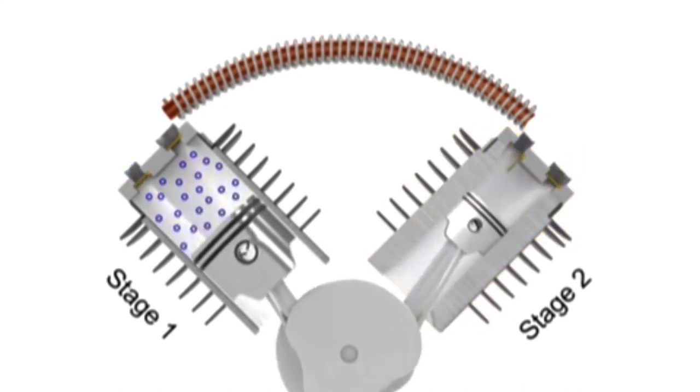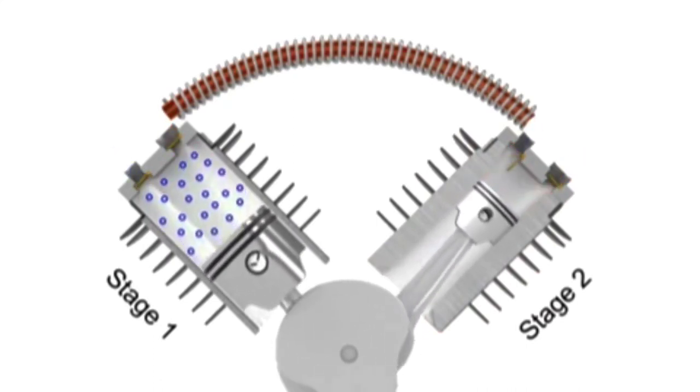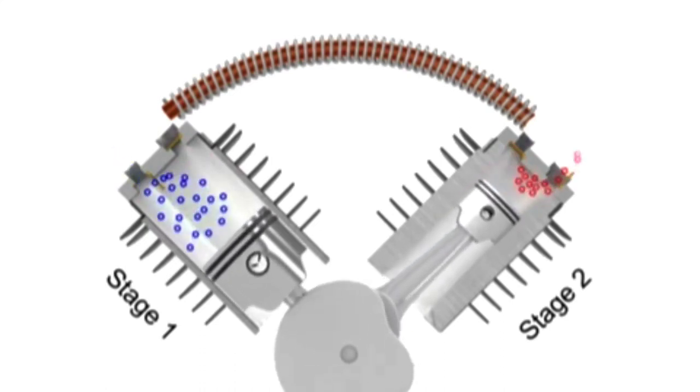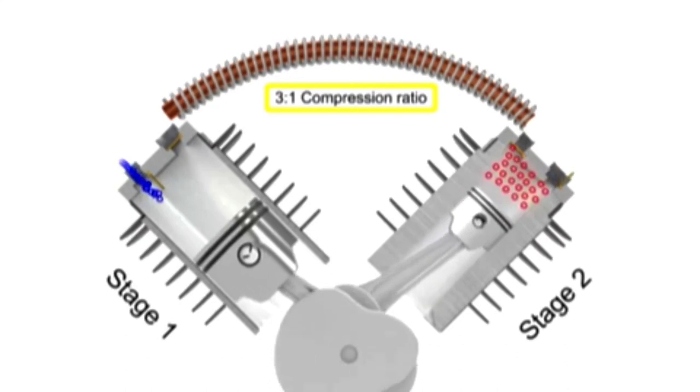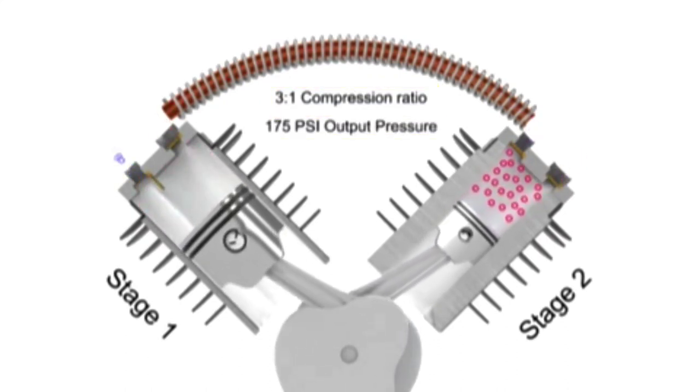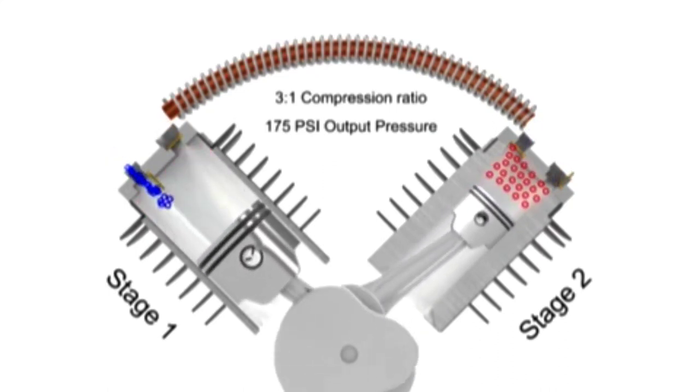The compressed air entering the second stage is sometimes called supercharged air. Two-stage compressors have a compression range of 3 to 1 or even less per stage, but can operate up to 175 PSI. They can also deliver more air at a higher pressure than single-stage compressors of the same horsepower.